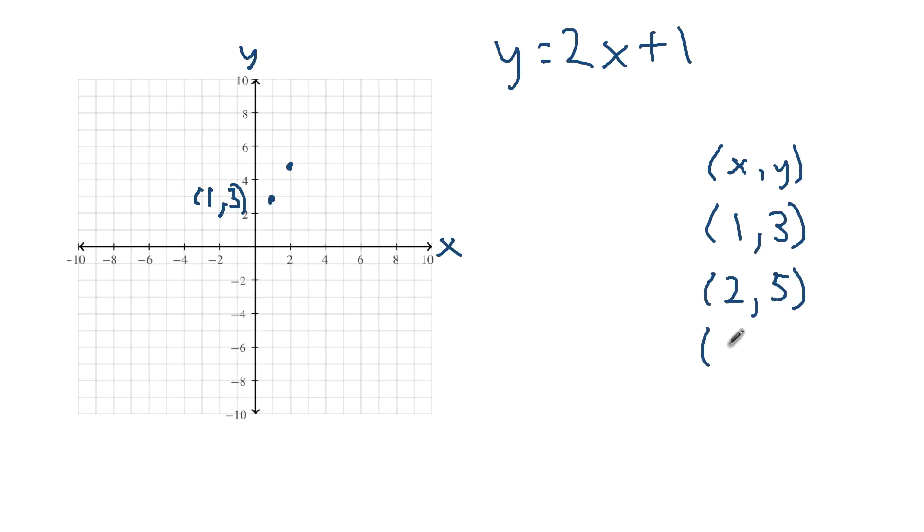Let me show you how to plot points with negative values. Let's say x is negative 1. If we plug negative 1 up here, 2 times negative 1 is negative 2. Negative 2 plus 1 is negative 1. So when x is negative 1, y is negative 1. For x, negative means go to the left. So we start at the origin, go left 1, and then since y is negative, we need to go down 1. So we've got this point right here.